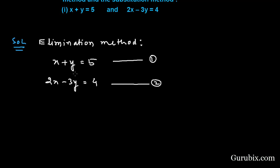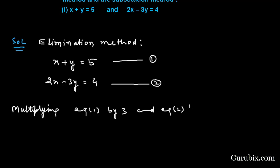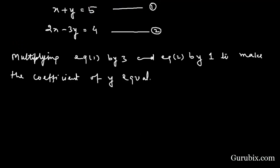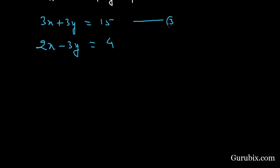Now we shall multiply equation 1 by 3 and equation 2 by 1 to make the coefficient of y equal. Multiplying equation 1 by 3 gives us 3x + 3y = 15 (equation 3), and multiplying equation 2 by 1 gives us 2x - 3y = 4 (equation 4).